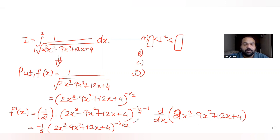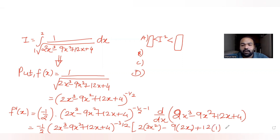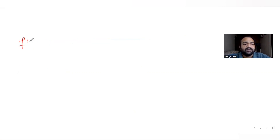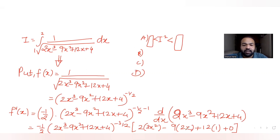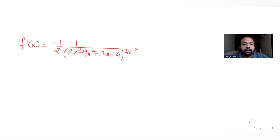The derivative terms: derivative of 2x³ is 6x², derivative of 9x² is 18x, derivative of 12x is 12, and the constant 4 gives 0. So f'(x) becomes minus half times 1 upon (2x³ minus 9x² plus 12x plus 4)^(3/2), multiplied by (6x² minus 18x plus 12).